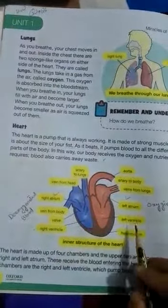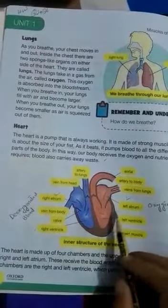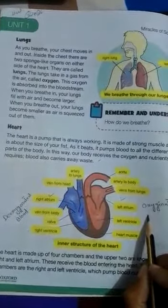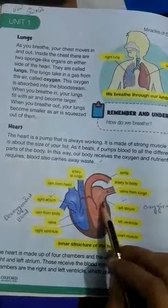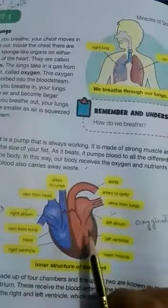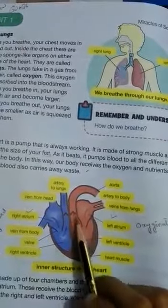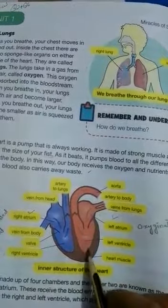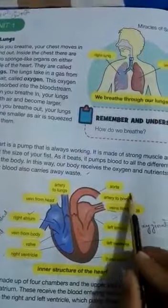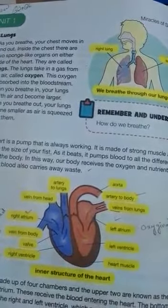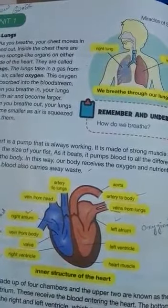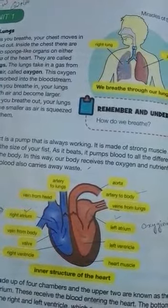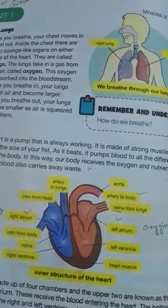The left atrium and left ventricle receive oxygenated blood, meaning blood that contains oxygen. The heart receives oxygenated blood from the lungs through veins, and arteries take oxygenated blood from the heart and move it toward the body. This movement of blood around our body is known as the circulation process. The heart takes less than 60 seconds to pump blood to every cell in our body.